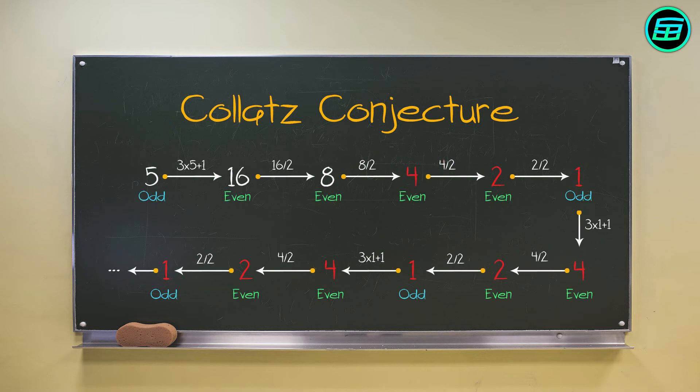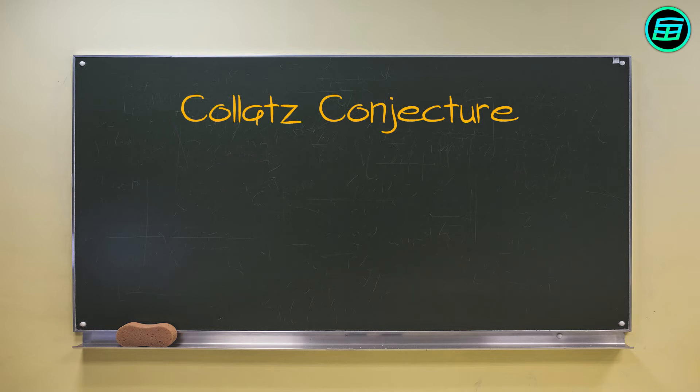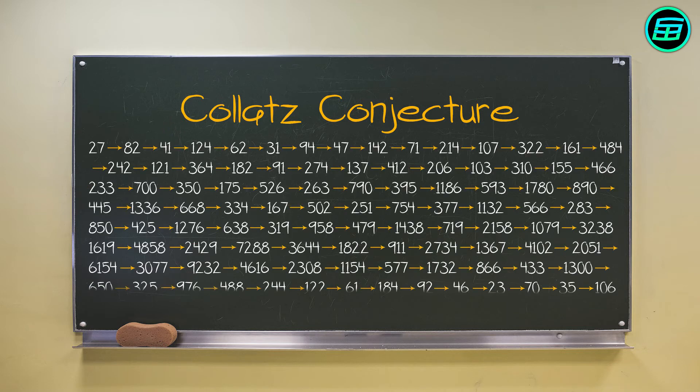If we want to do our own checking, we don't have to run through the calculations for every number. For example, if the starting number is 16, this was included in the calculations when we picked 5. If we choose 27 as a starting point, it turns out we've checked these numbers as well.